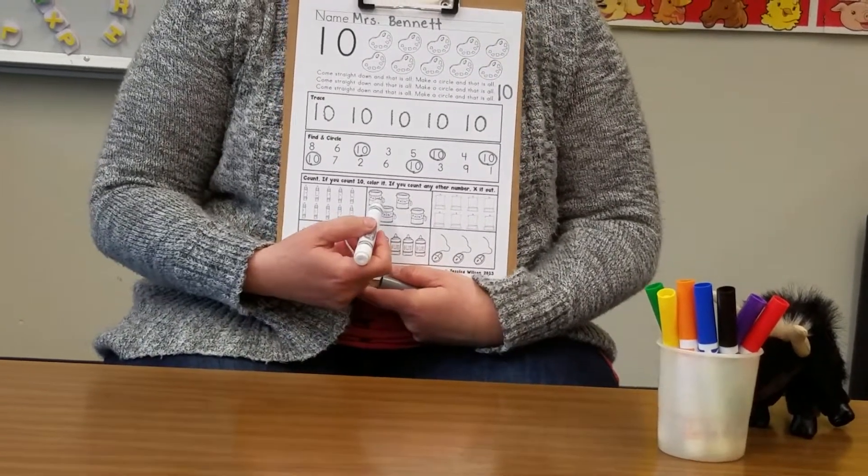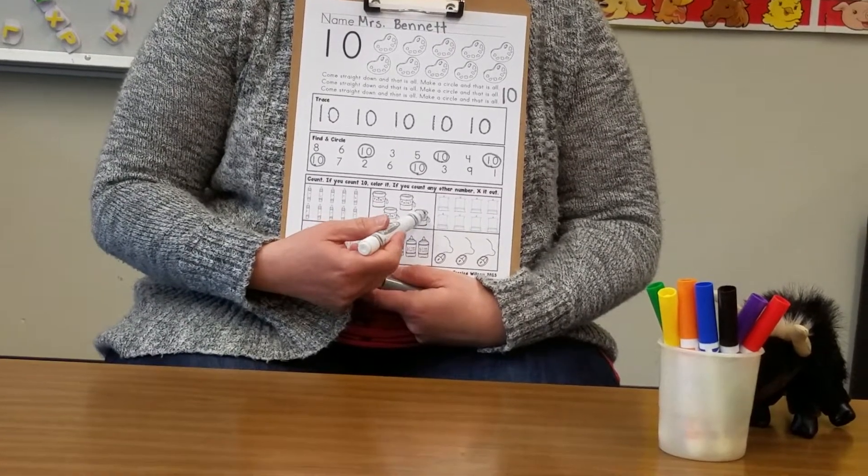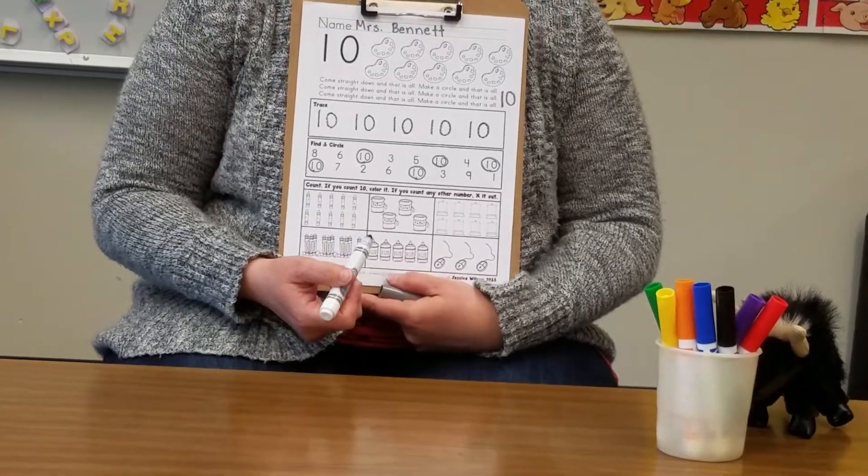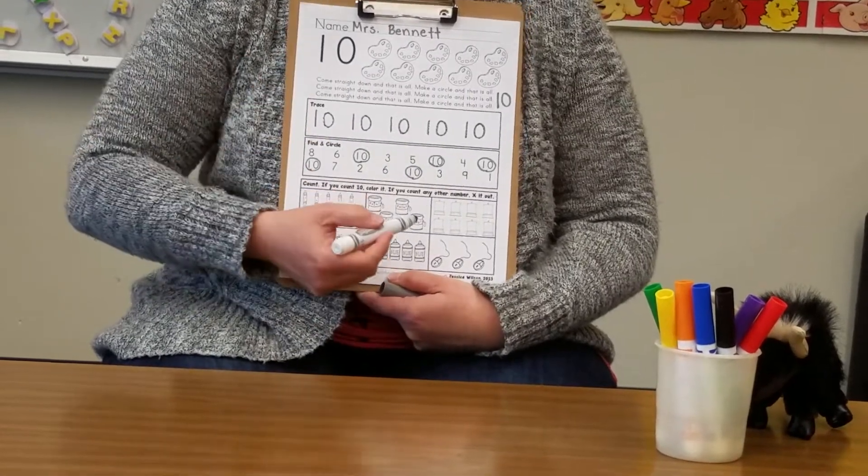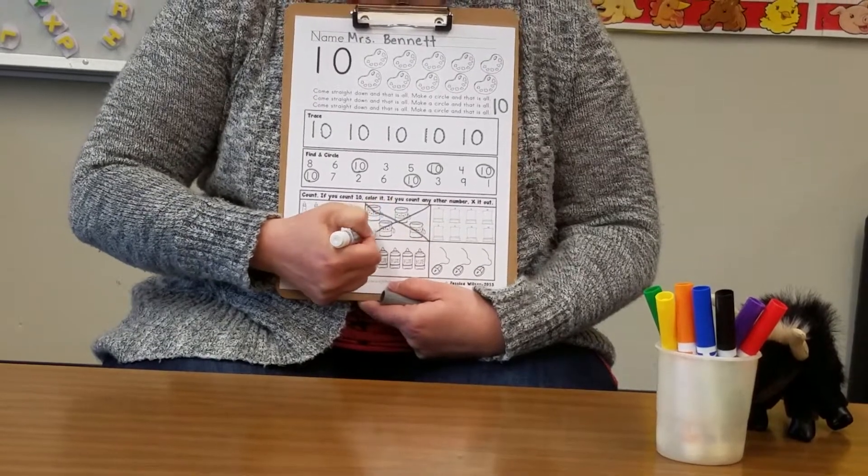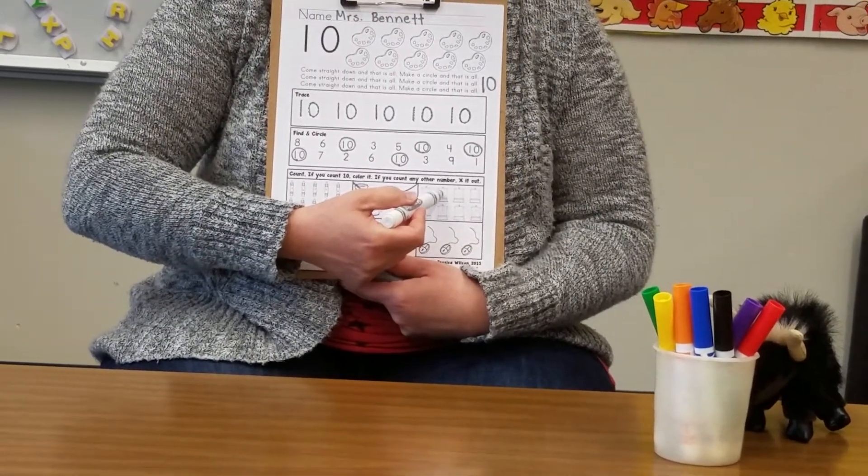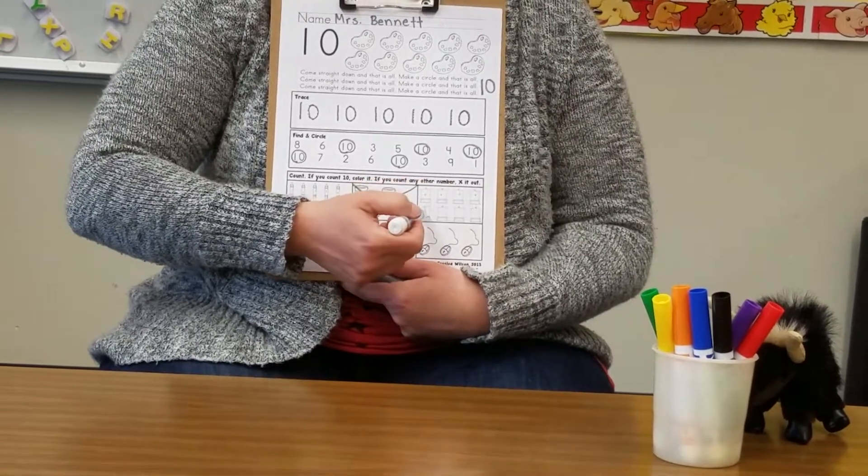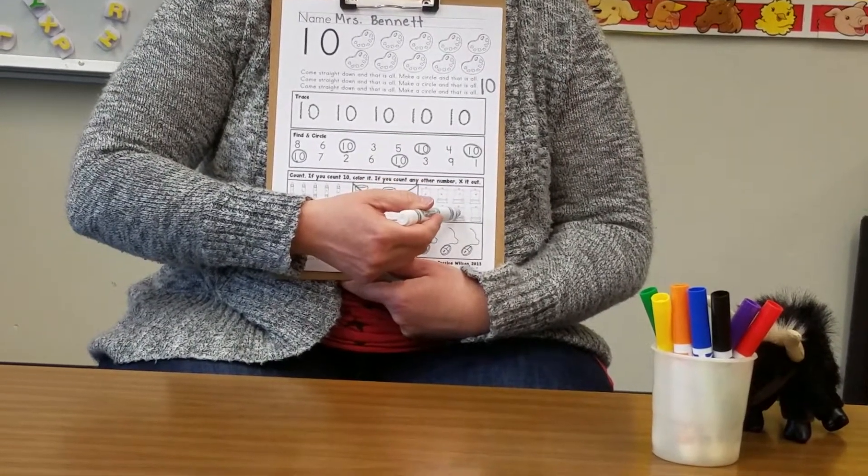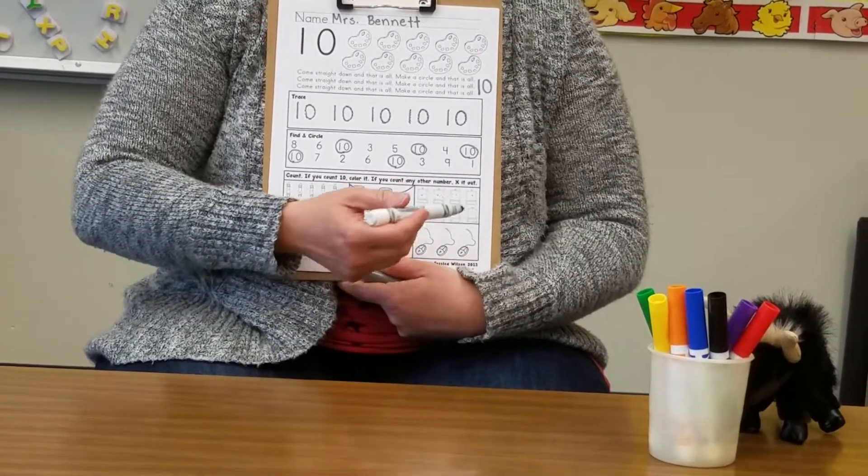Let's count the buckets of paint. 1, 2, 3, 4. So we're going to exit out. Good remembering. Let's count the painting easels. 1, 2, 3, 4, 5, 6, 7, 8. So we're going to exit out.